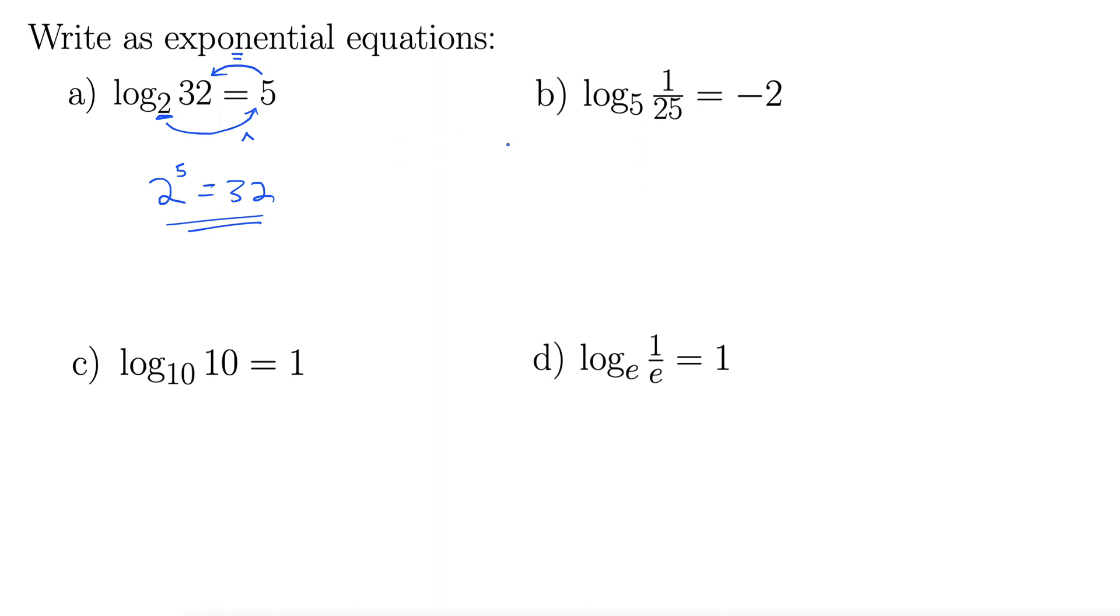Let's try B. We have log base 5 of 1/25 equals negative 2. We start with the base, so we start with 5, around, that's our exponent, so 5 to the power of negative 2.